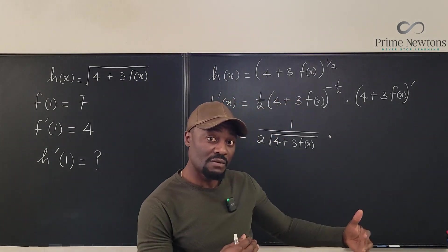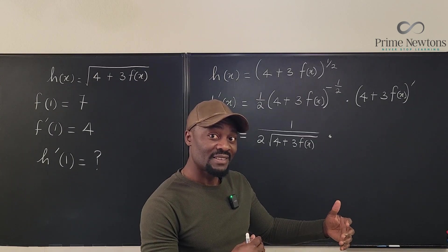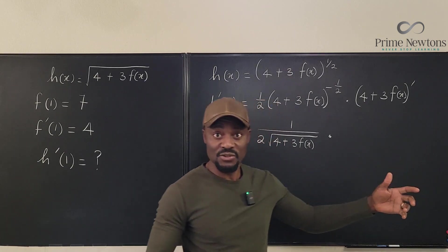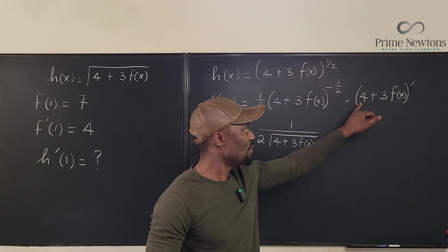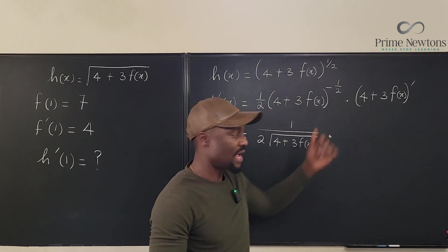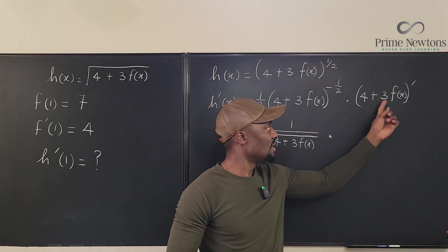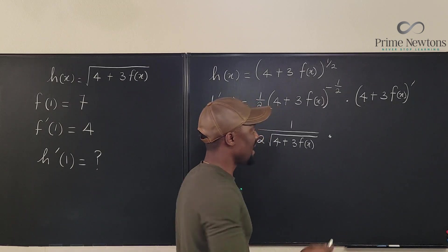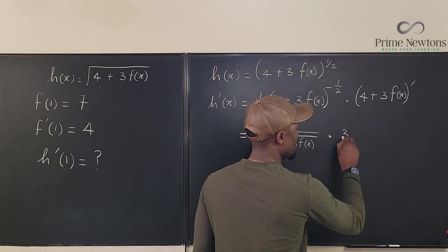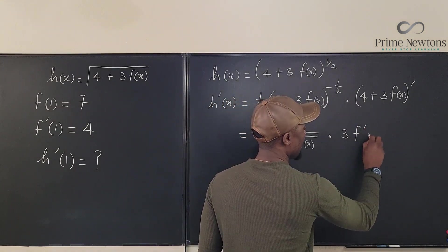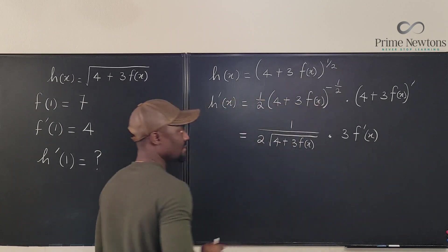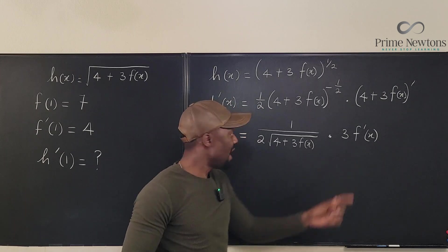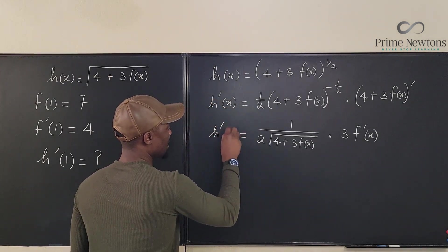And we're going to be multiplying by the derivative of this function. Well remember the derivative of a sum is the sum of the derivatives. So if you differentiate 4 with respect to x you get 0. If you differentiate 3 times f(x) with respect to x you just get 3f prime of x. So what we have here is going to be 3 times f prime of x. That's it. So now we can say this is h prime of x.